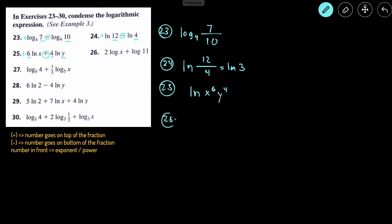Number 26: we write the log and set up a fraction. There's a positive, so we put x on top of the fraction. The number 2 in front of the log becomes the power, so we raise x to the power of 2. There's another plus, so 11 goes on the top of the fraction as well, giving us log(11x²).